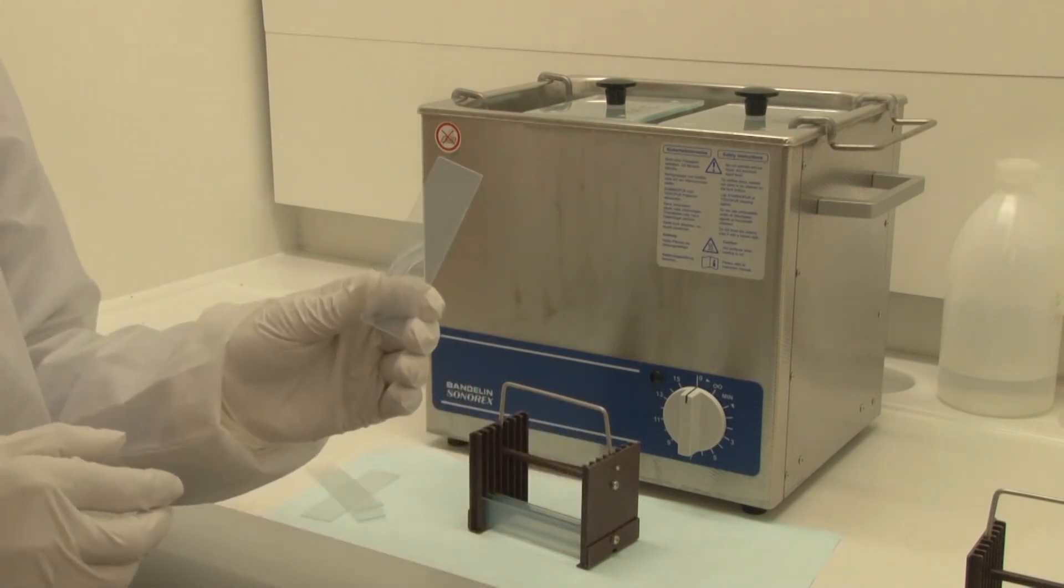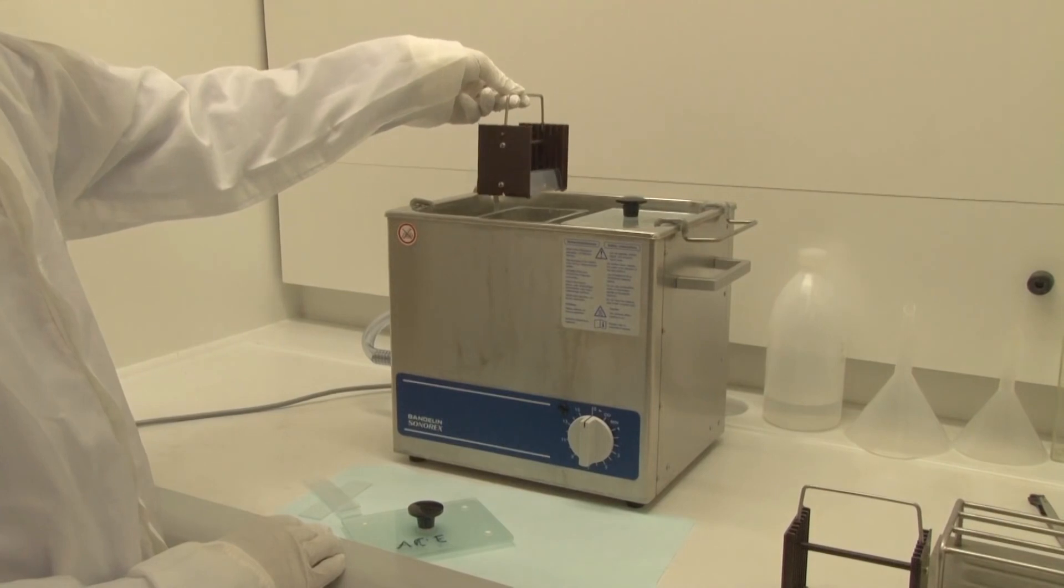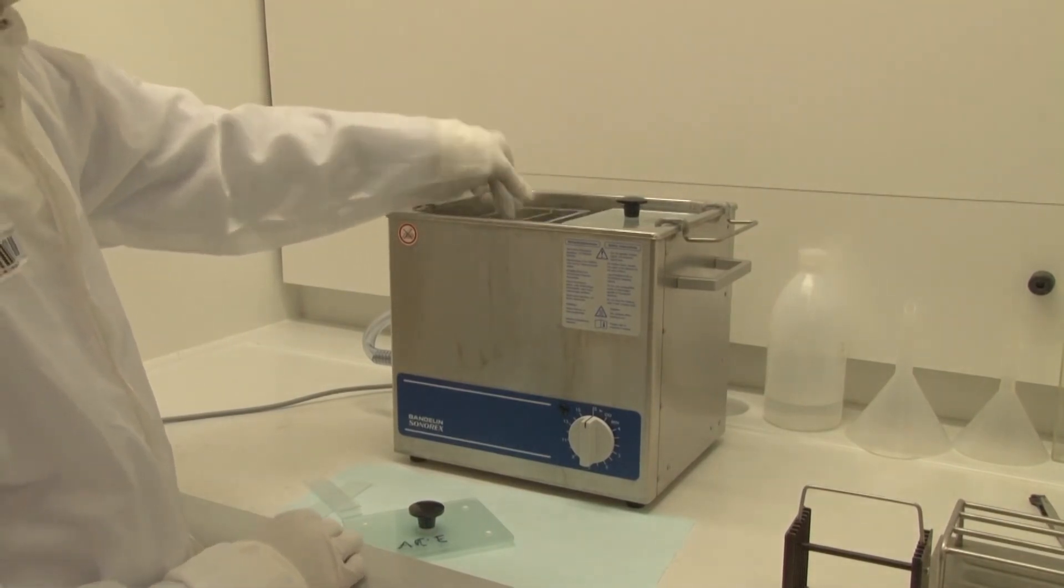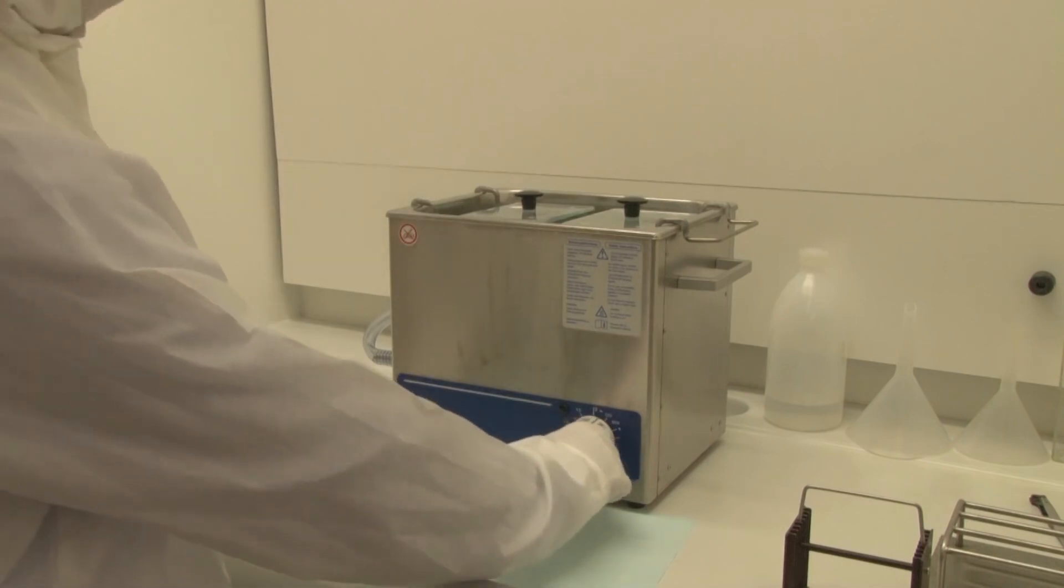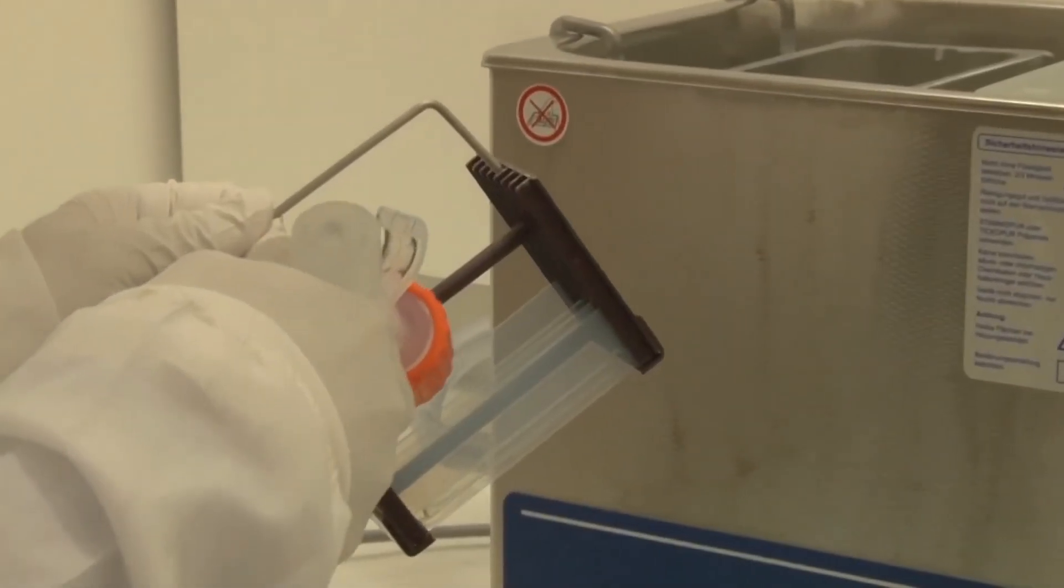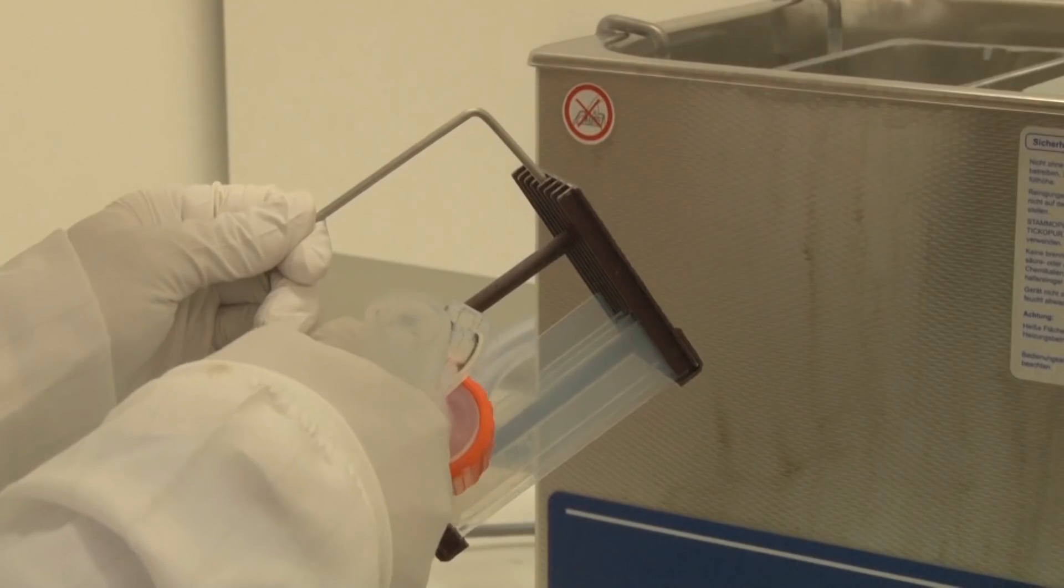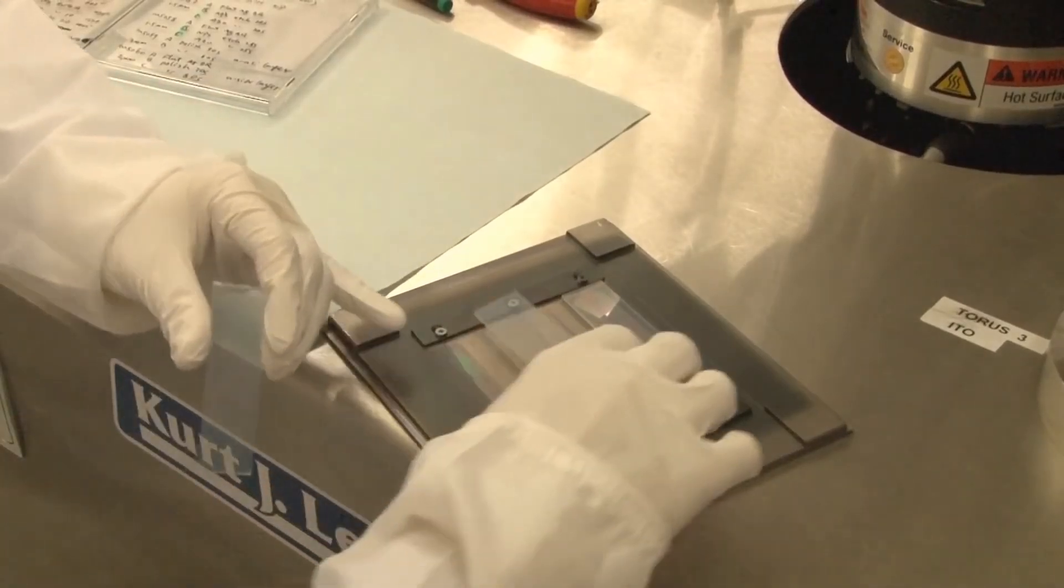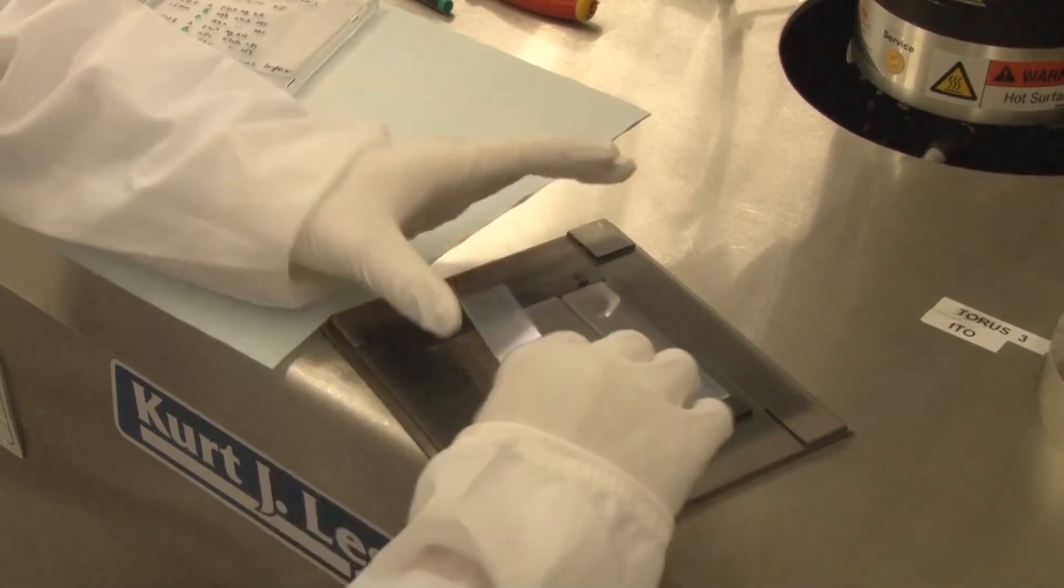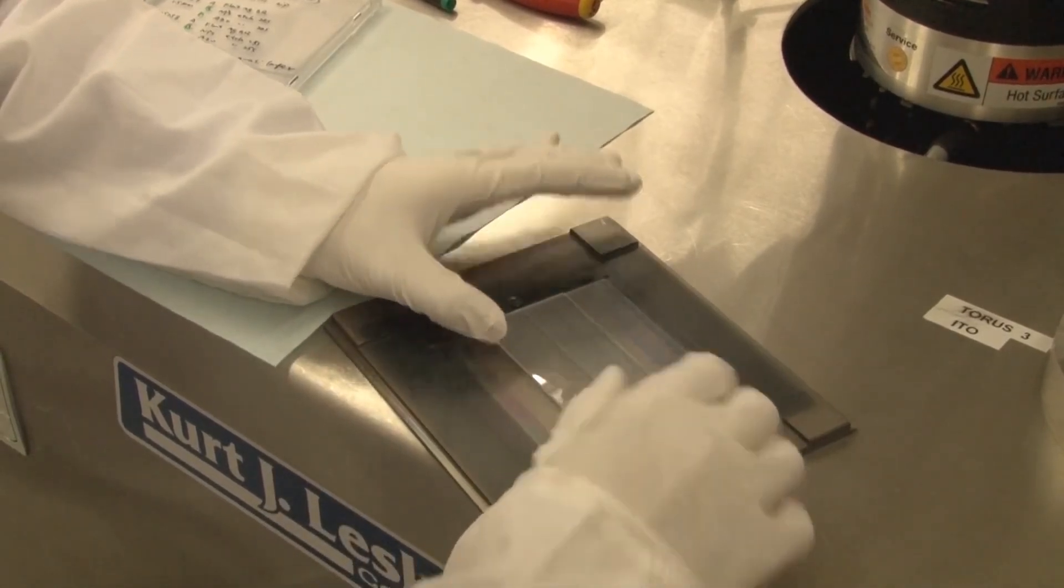Before deposition, the samples have to be cleaned in a so-called ultrasonic cleaning bath. The potential dirt and dust particles are removed. Since the solar cell device is only several hundreds of nanometers up to a few microns thick, a dust particle on the substrate will generate a shunt between the front and back contact in the final solar cell.